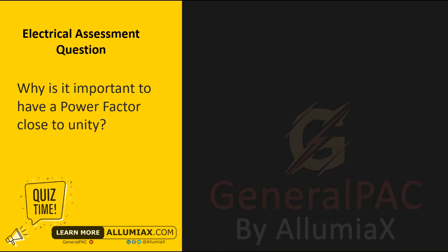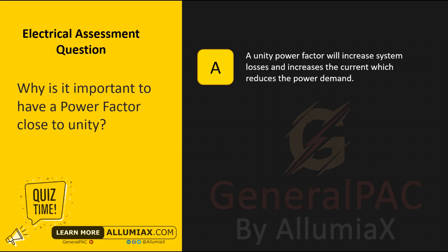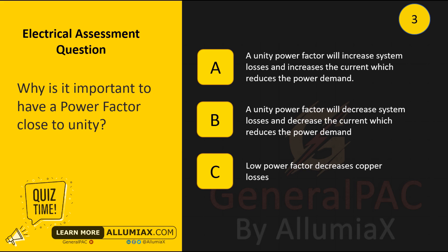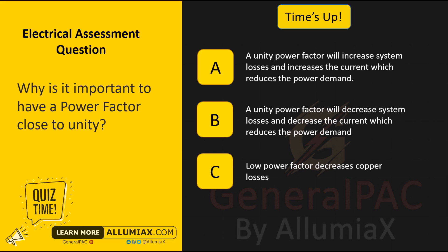Why is it important to have a power factor close to unity? A: A unity power factor will increase system losses and increase the current, which reduces the power demand. B: A unity power factor will decrease system losses and decrease the current, which reduces the power demand. C: Low power factor decreases copper losses. Time's up. The answer is B: A unity power factor will decrease system losses and decrease the current, which reduces the power demand.